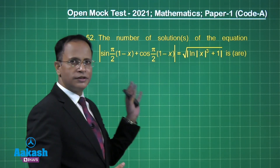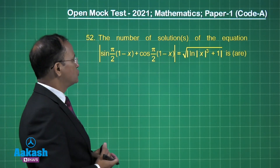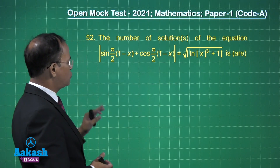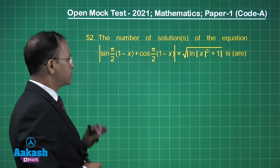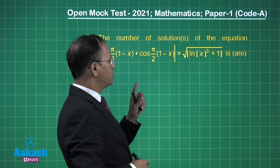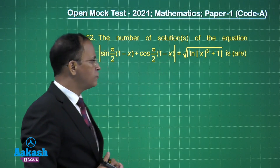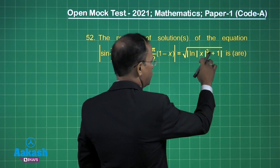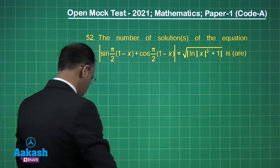Now friends, let us talk about this problem. This is question number 52. The number of solutions of the equation sin(π/2 · (1−x)) plus cos(π/2 · (1−x)), where the mod has been taken, is equal to the square root of the whole mod of ln|x³ + 1|. So how do we go about this problem?